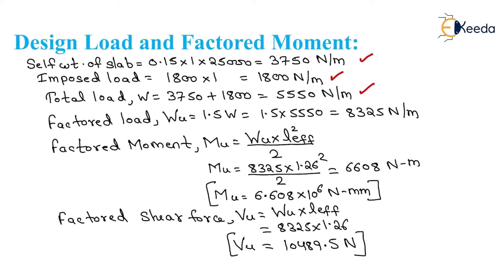Factored load: W_u equals W into 1.5. We get 5550 into 1.5 equals 8325 N per meter. For cantilever slab, factored moment M_u equals W_u into L_effective squared divided by 2. Putting values: 8325 into 1.26 squared divided by 2, giving M_u equals 6608 N·m per meter.